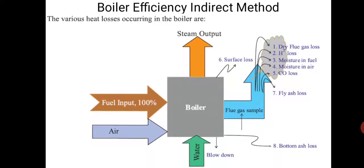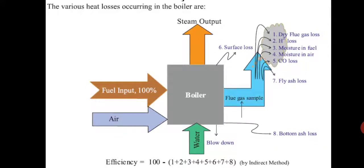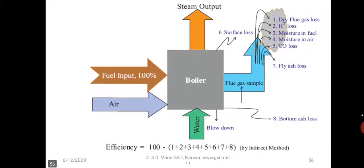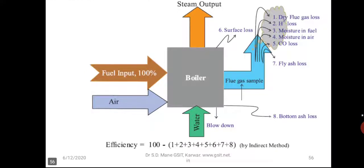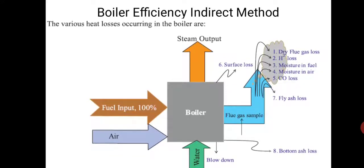For a boiler efficiency study, the fuel input and air are supplied, water goes in as steam comes out, and the flue gas losses are analyzed: dry flue gas loss, hydrogen loss, moisture in fuel, moisture in air, carbon monoxide loss, fly ash loss, surface loss, bottom ash loss, and blowdown. You study all these losses and subtract them from 100 percent — this gives the detailed efficiency of the boiler using the indirect method.